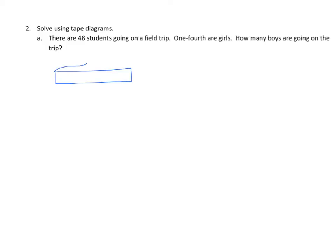Alright, tape diagram. Our whole is 48. And we partition it into four equal parts, and we can bracket off or we could even put a G in the square. This is the girls, and this would be the boys. So we want to know how many boys are going on the field trip.